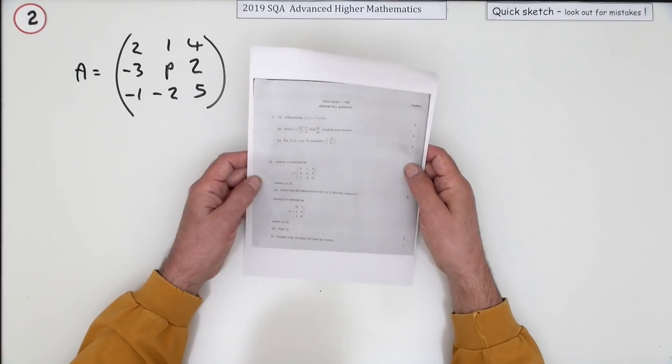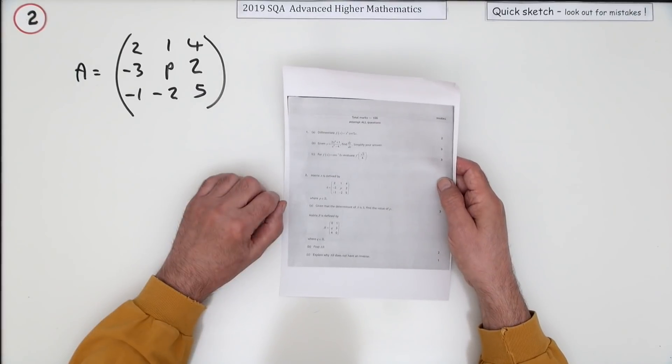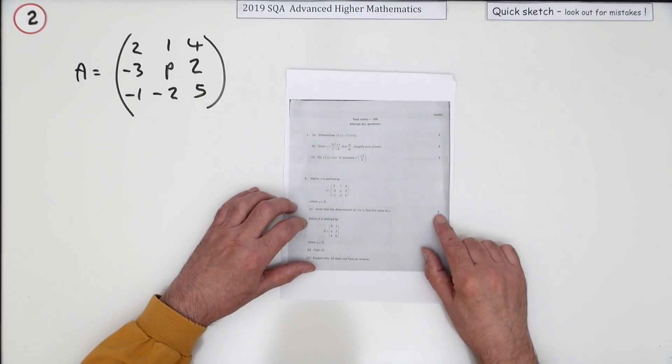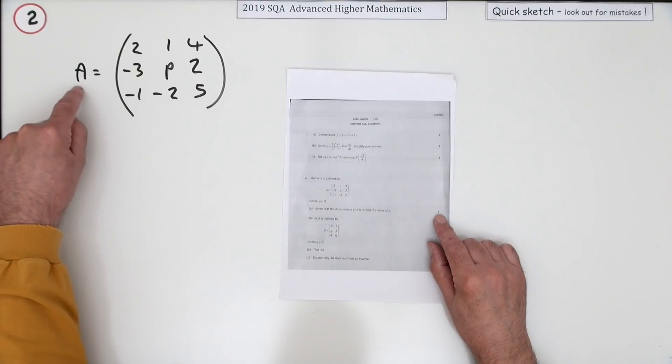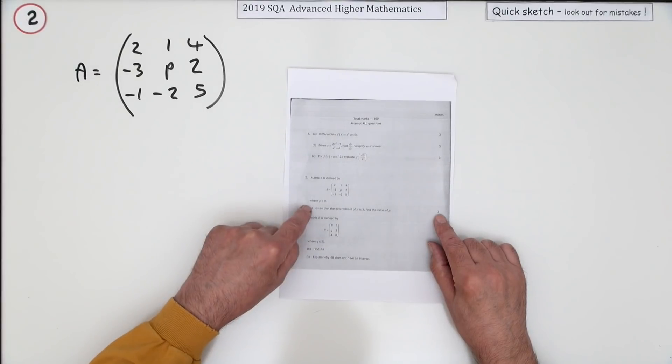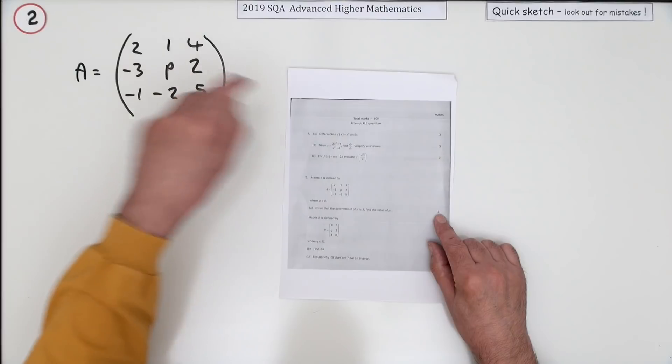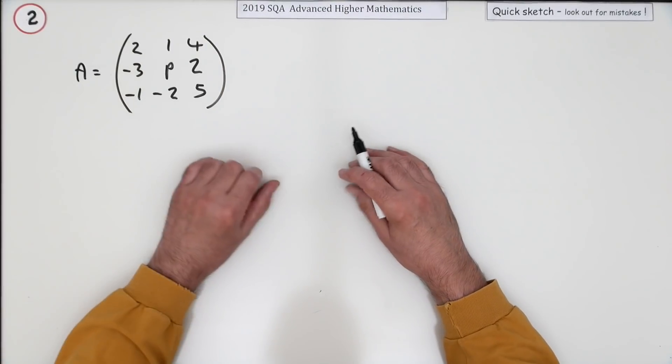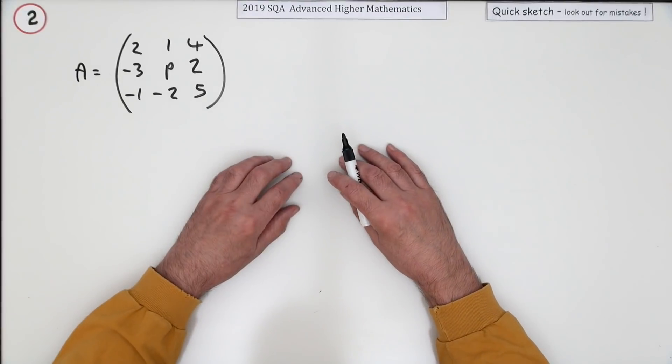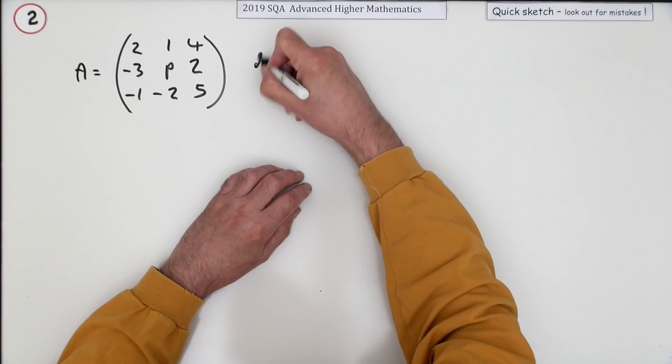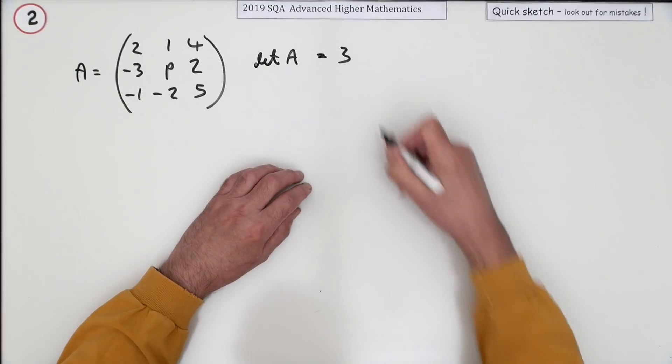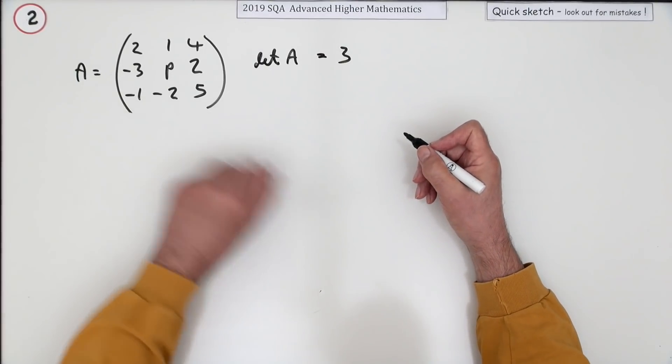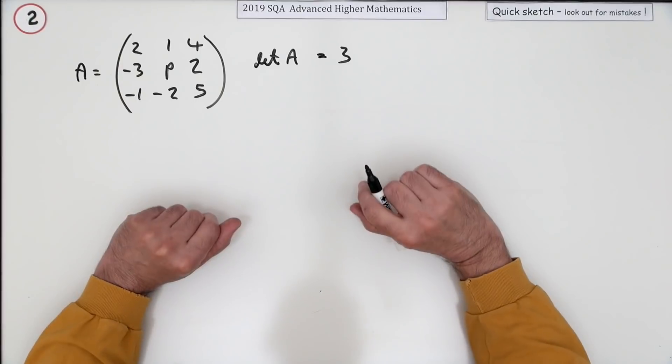You've got a matrix here, it's a three by three matrix. What does it say for the first part for three marks? It says the determinant of this matrix is three, and if that's the case, what would P have to be? Well, matrices is just loads of micro arithmetic. If the determinant of A is equal to three, that means I'll have to evaluate it and equate it to three.